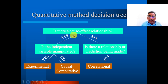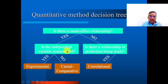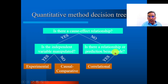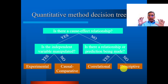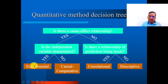To summarize the decision flowchart: Is there a cause-effect relationship? If yes, is the independent variable manipulated? If yes, it is experimental research; if no, it is causal-comparative. If there is no cause-effect relationship, is there a relationship or prediction being made? If yes, it is correlational research; if no, it is descriptive research. This concept clarifies the differences between descriptive, correlational, causal-comparative, and experimental research.